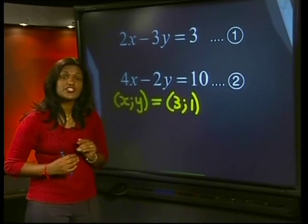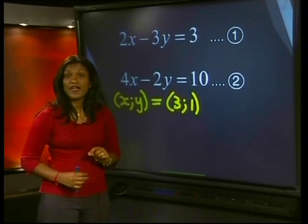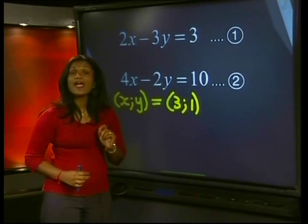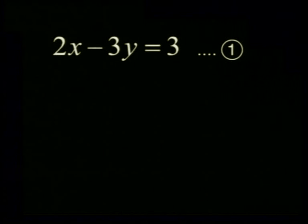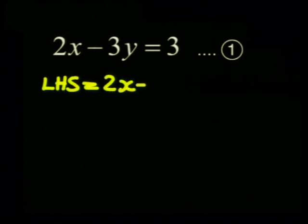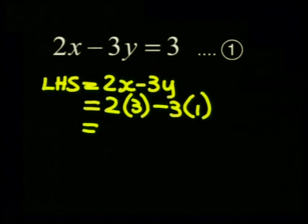Now let's do a quick check to see if our ordered pair is really correct. To do this, we need to substitute the values x equals 3 and y equals 1 back into each of the equations. So for the first equation, we know that the left-hand side is equal to 2x minus 3y. We know that we need to substitute x as 3 and y as 1. So this gives us 2 times 3, which is 6, minus 3, which gives me 3, which is equal to the right-hand side.